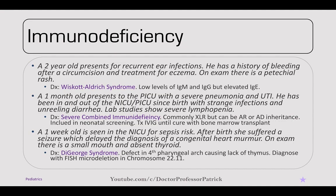A two-year-old presents for recurrent ear infections. He has a history of bleeding after circumcision and treatment for eczema. On exam, there is a petechial rash. This is Wiskott-Aldrich syndrome, with low levels of IgM and IgG but elevated IgE. Think of this as the triad of eczema, thrombocytopenia with bleeding, and immunodeficiency.